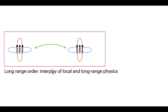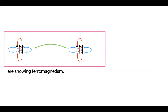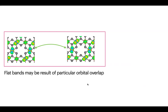You put a transition metal atom in a material and it can form long-range order by interacting with other atoms — an interplay of local and long-range physics leading to a long-range ordered state like ferromagnetism. The localized states don't have to be orbitals; there's recent work on flat bands in kagome materials or bilayer graphene. In a kagome hexagonal lattice, a wave function alternates plus/minus within the hexagon but goes to zero outside, forming a localized state.